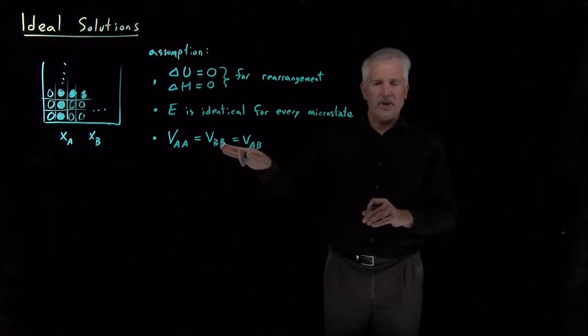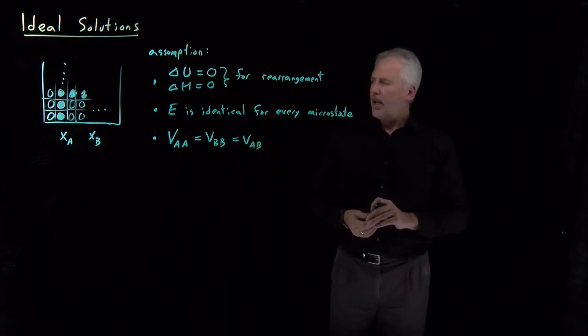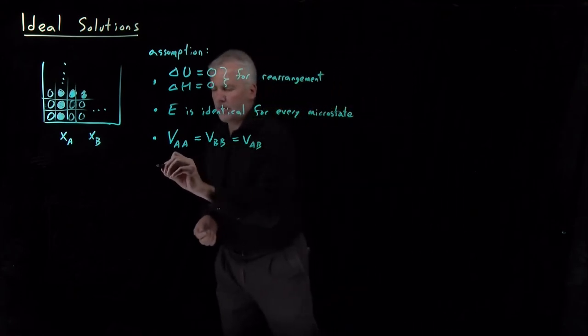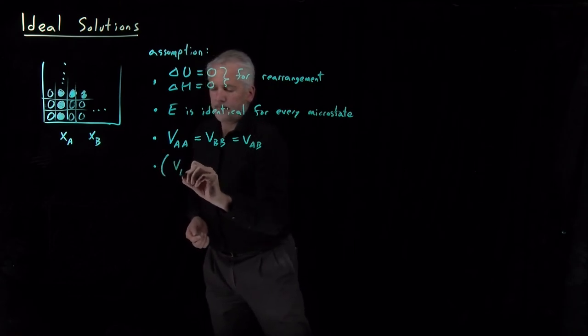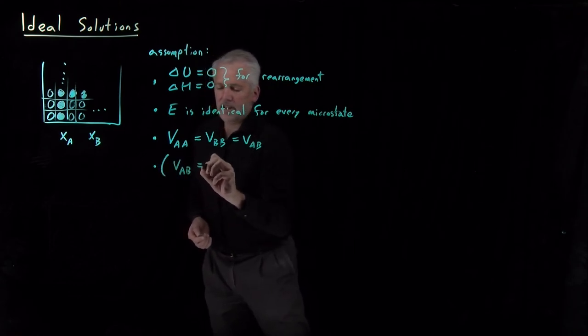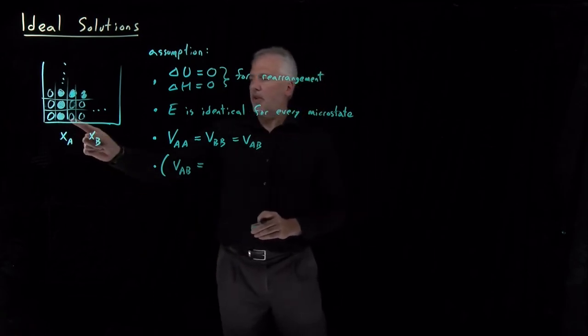Turns out that's actually a little bit stricter than I need. I won't go into the details too much, but it's actually good enough to require that the heterogeneous interaction, the interaction between an A molecule and a B molecule